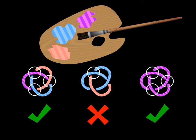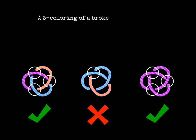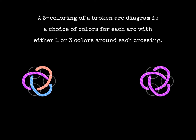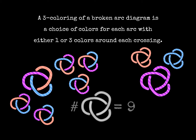We call three-coloring of a broken arcs diagram such a choice of colors for each of the arcs, such that at each crossing we see just one color or all the three colors. This diagram of the trefoil knot has nine three-colorings, because we can freely choose colors for two of the arcs and the third one will be determined by the rule.